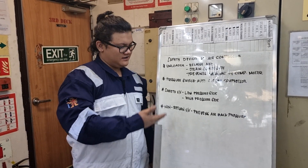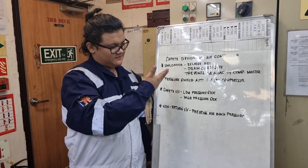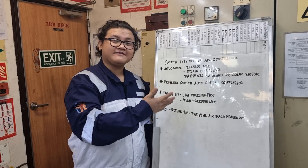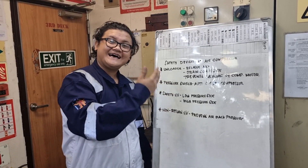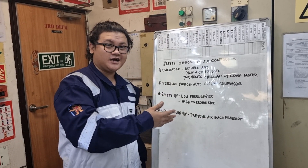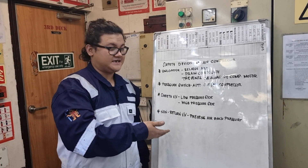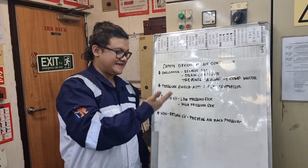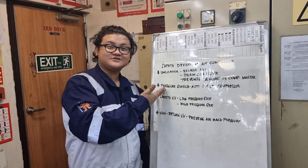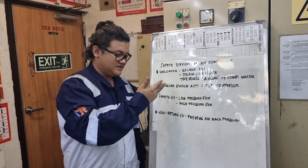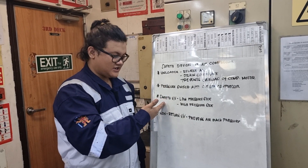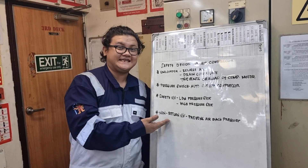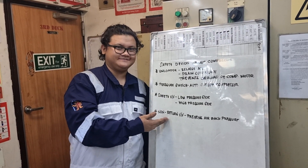There are four safety devices attached in our air compressor. One is a loader. Second, pressure switch. Third, safety valve. And fourth, is non-return valve.